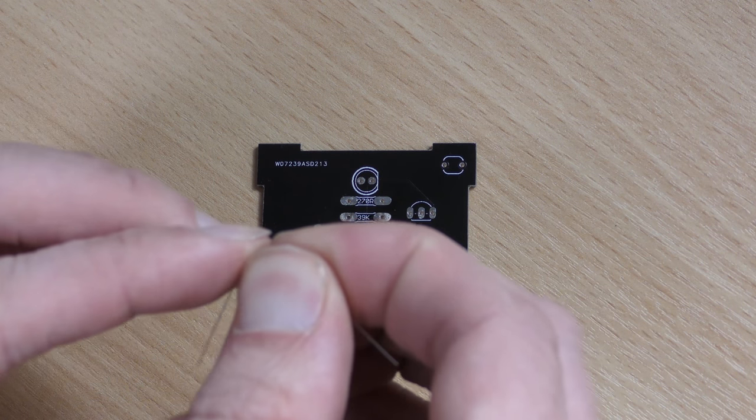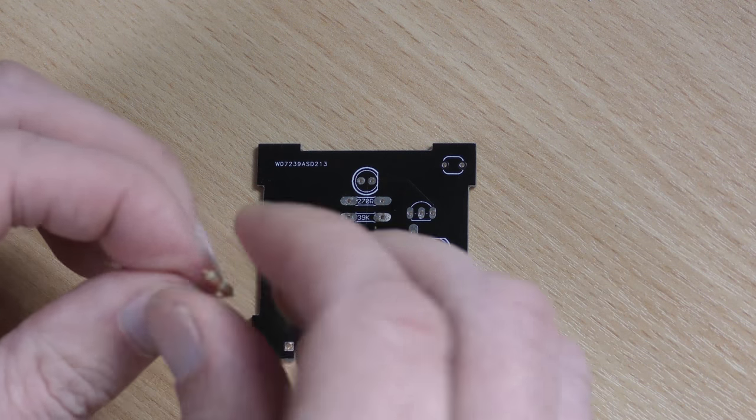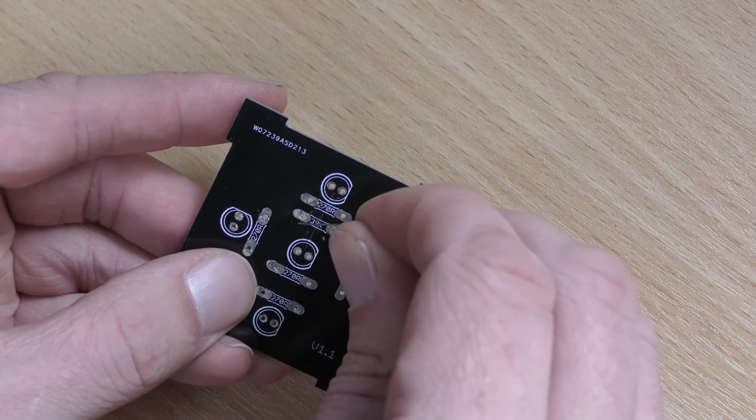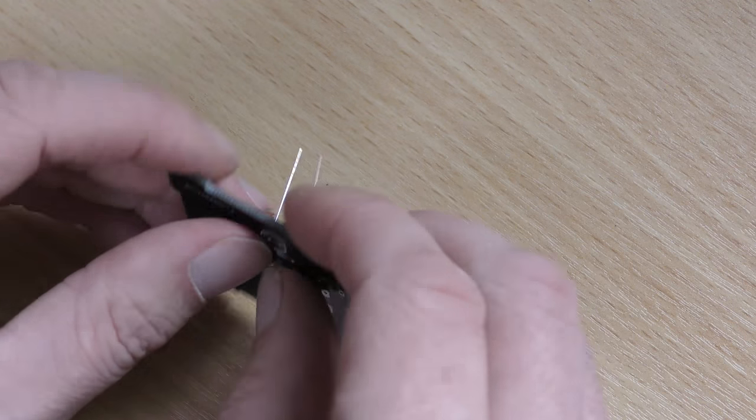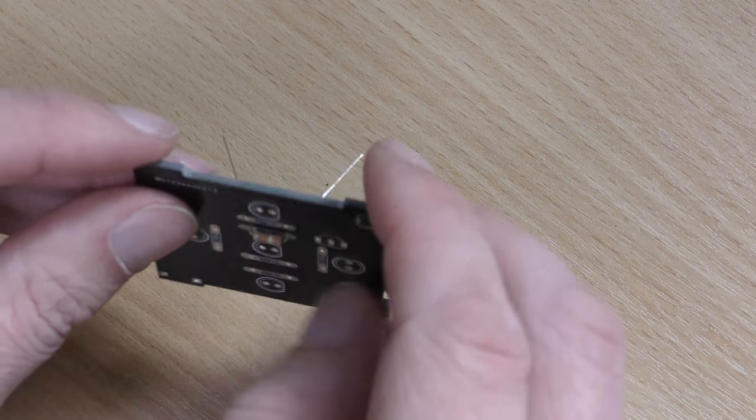So firstly you need to bend them over like that. This is the 39k one, so we'll pop that into the correct position, which is just here. Make sure it's sitting flush. You can bend the legs out a little bit there so it doesn't fall.